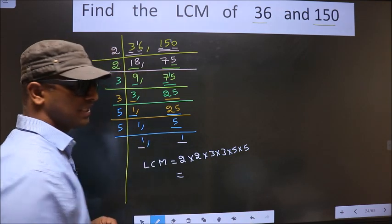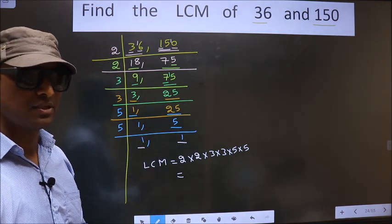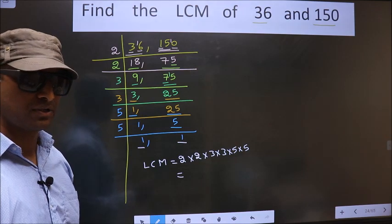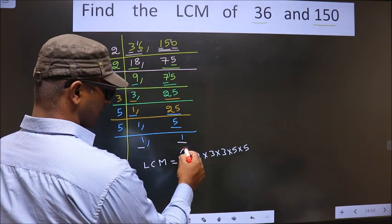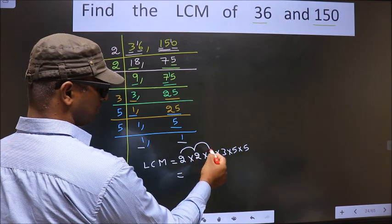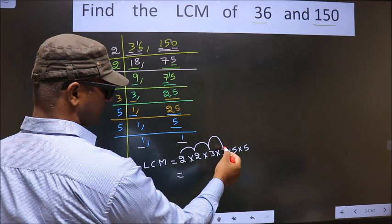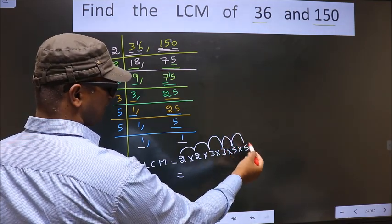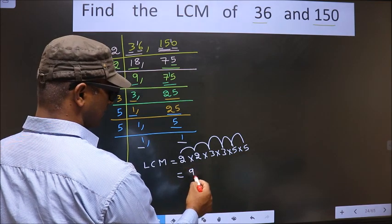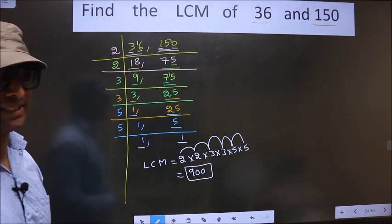So you multiply all these numbers. Whatever number you get, that is your LCM. Let us multiply. 2 times 2 is 4. 4 times 3 is 12. 12 times 3 is 36. 36 times 5 is 180. 180 times 5, 18 times 5 is 90, 0 as it is. So this is our LCM.